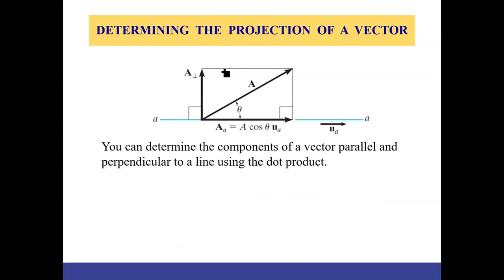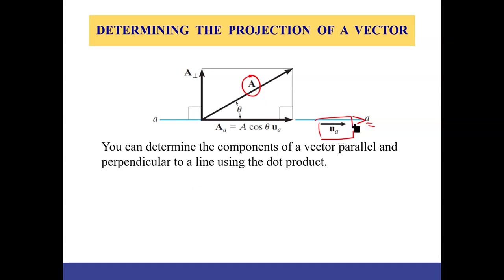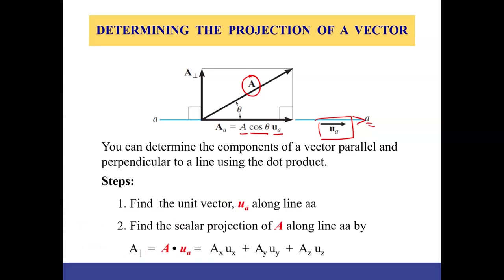Another application is determining the projection of a vector. If we have vector A and want to find its projection along line 'a', we need the direction of that line given by unit vector u_a. The projection of A along the 'a' axis is A multiplied by the unit vector u_a multiplied by cosine of the angle between them.